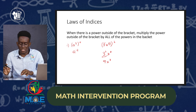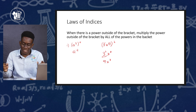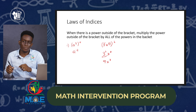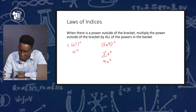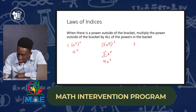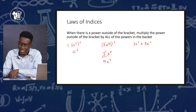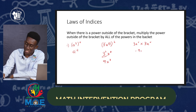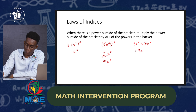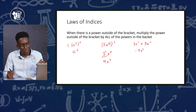Now this 3x to the 4th all raised to the second power — we can also verify using the previous law. Raising to the second power means multiplying by itself twice, so 3x⁴ times 3x⁴. We multiply the numbers: 3 times 3 gives 9. Then x to the 4th times x to the 4th — the bases are the same, so we add the powers: 4 plus 4 gives 8. So we get 9x to the 8th power — the same answer. And that is what this law is all about.